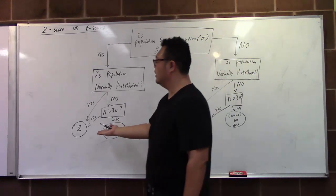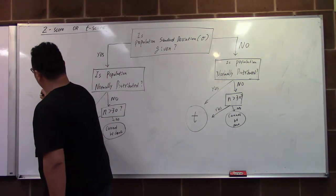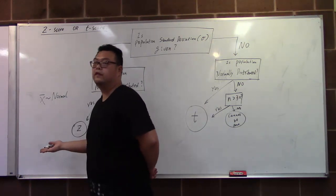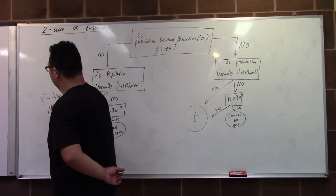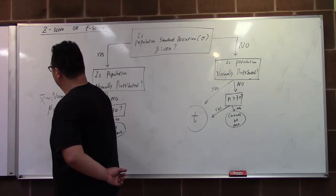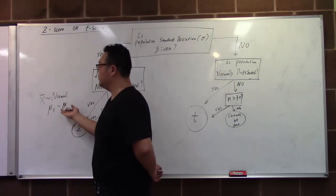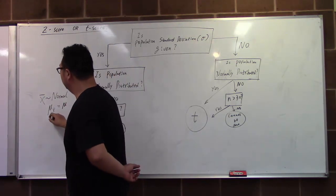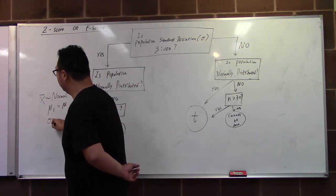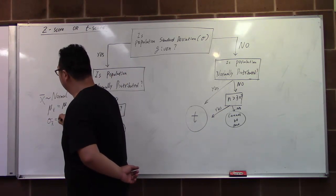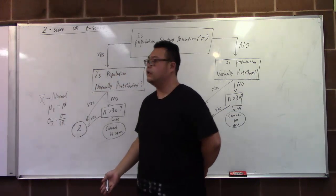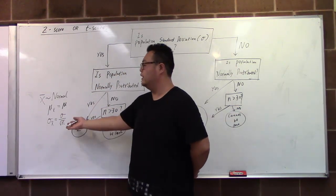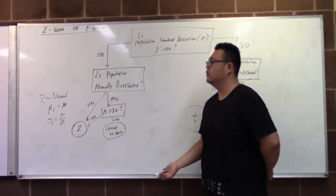For the z-score, our sample mean follows the normal distribution. If we know the population mean, the sample mean has the same population mean, and the standard deviation of the sample mean is the standard deviation of the population divided by the square root of sample size n. So x-bar follows the normal distribution.